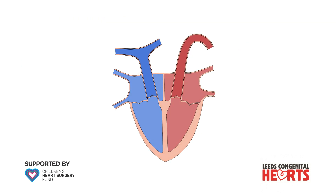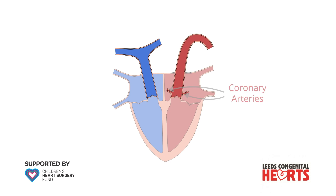Shortly after the aorta leaves the heart, it gives off two branches, the coronary arteries, that supply the heart itself with blood.